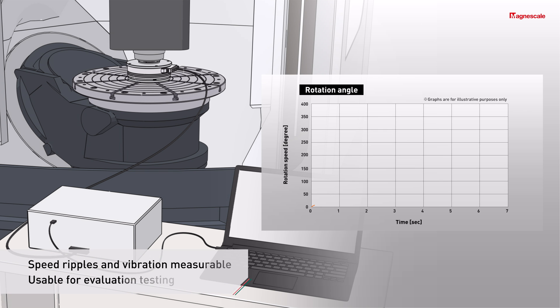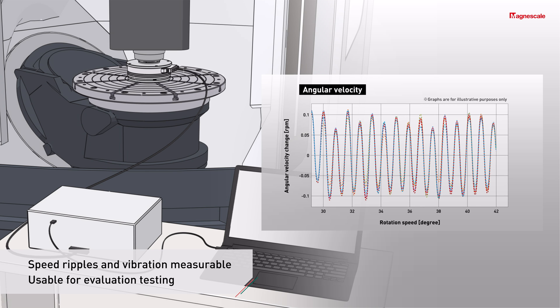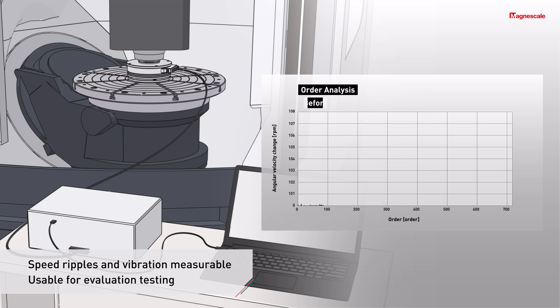Furthermore, the system can measure speed fluctuations during rotation and extremely small vibrations during the machining process. Thus the data can be used for order analysis and accuracy improvement.